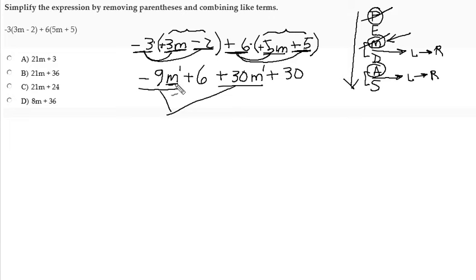So we say to ourselves m to the first plus m to the first remains m to the first. Addition does not change the exponent on a variable. Now we can think money. With addition of terms, we can think about money. Negative 9 is like I owe somebody $9. Positive 30 is like I have $30. So when we pay this guy back all of his 9, we still have $21 left over. That results in a positive number.